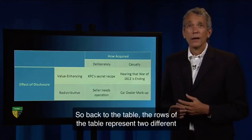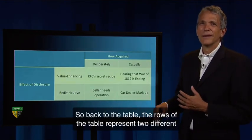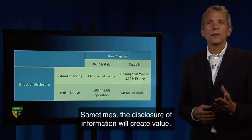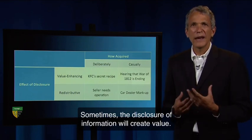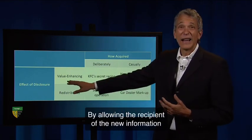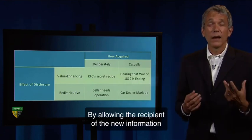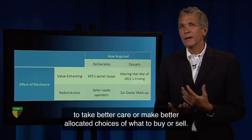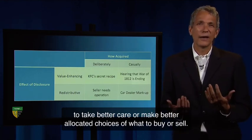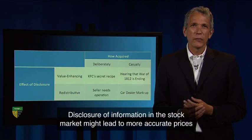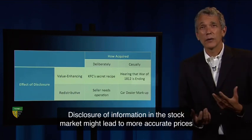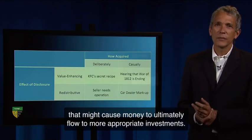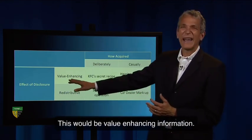Back to the table. The rows of the table represent two different effects of information disclosure. Sometimes the disclosure of information will create value by allowing the recipient of the new information to take better care or make better allocative choices of what to buy or sell. Disclosure of information in the stock market might lead to more accurate prices that might cause money to ultimately flow to more appropriate investments. This would be value-enhancing information.